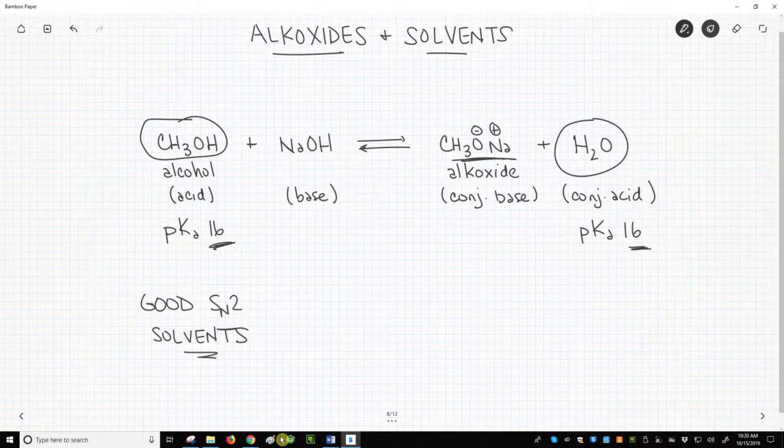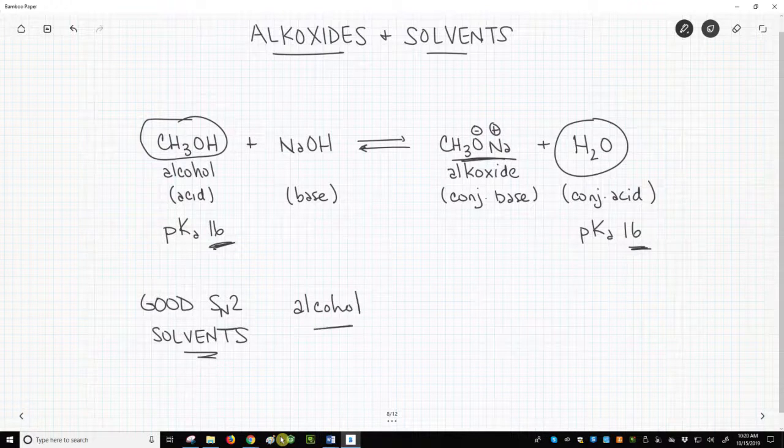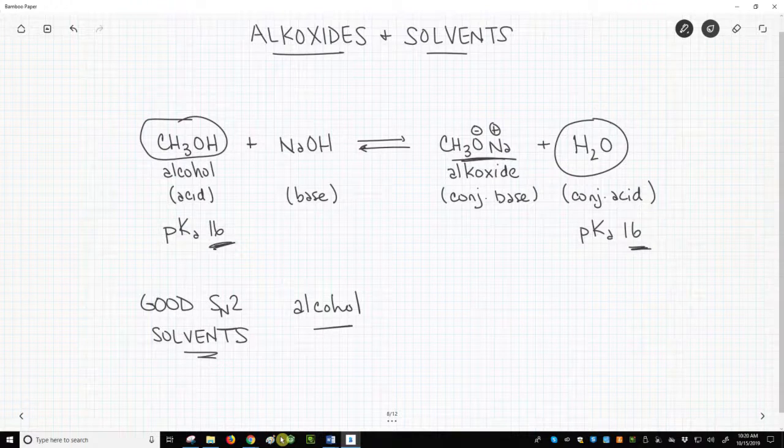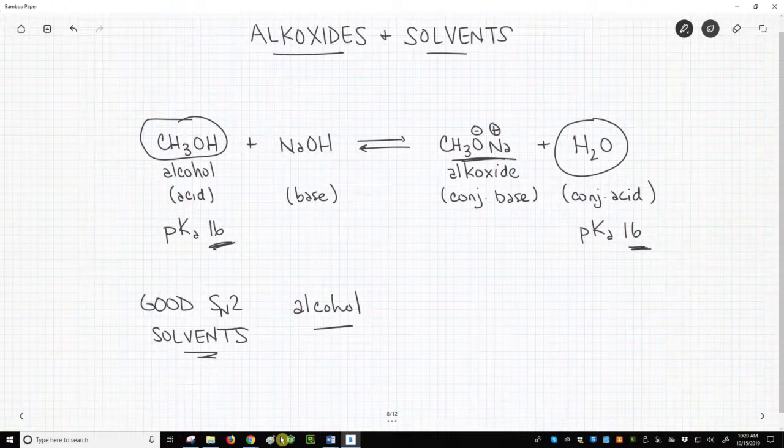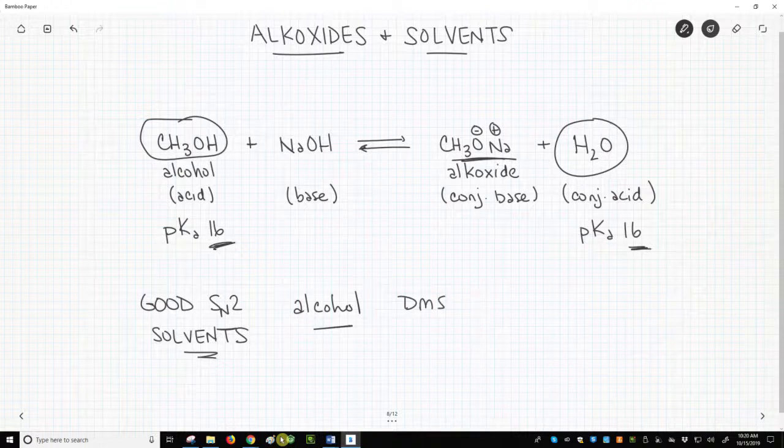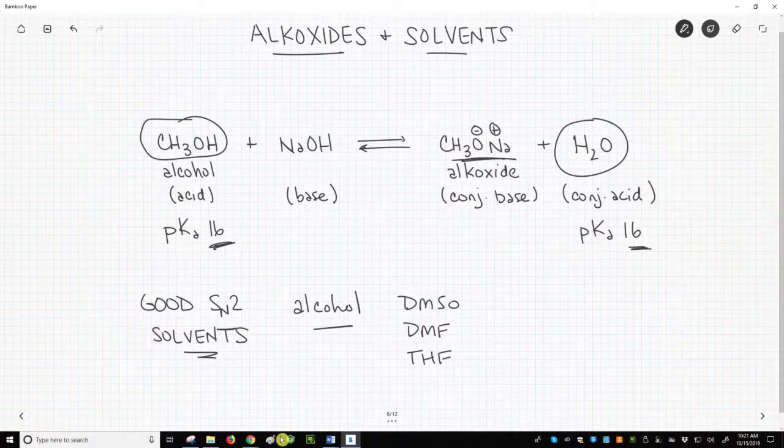Probably the most common solvent is the parent alcohol. So a common solvent for sodium methoxide is methanol, the conjugate acid of our base. For sodium ethoxide, you'd use ethanol. Other solvents like DMSO, DMF, THF are also very common.